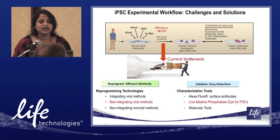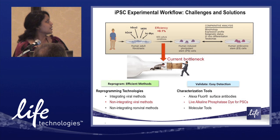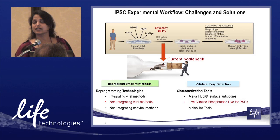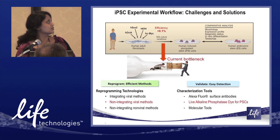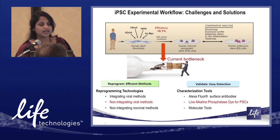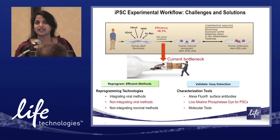To start with, the most common method for generating iPSCs is transduction of the four factors — shown here are the Yamanaka factors. After a black-box process that takes anywhere between three to four weeks, you end up with iPSC colonies.